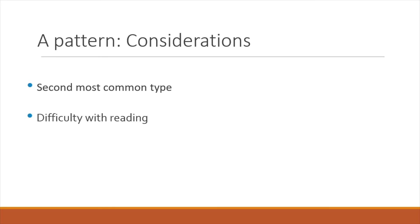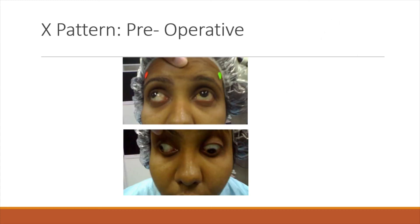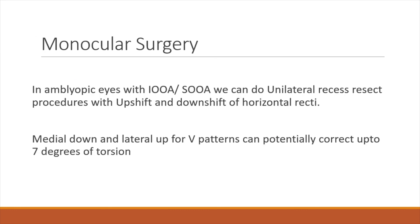For A patterns, the second most common type, these children usually present with difficulty in reading. If you have superior oblique muscle overaction, you do a posterior tenotomy of the superior oblique (PTSO), in which you cut seven-eighths of the superior oblique fibers, leaving the anterior one-eighth — the torsional fibers — intact, because cutting those causes disturbing diplopia. If no muscle dysfunction, you again do vertical upshift or downshift of the horizontal recti using the same rule: medial rectus to the apex, lateral rectus to the base. The same patient is doing well post-operatively.